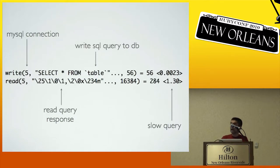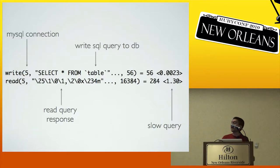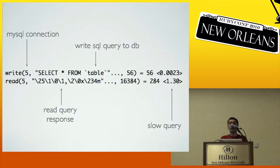Similarly, on a Rails app you'd see something like this: we're writing to file descriptor 5 an SQL query, and then right after that we read the results back. Here you'll notice the read call takes about 1.3 seconds — this is indicative of a slow query. I'll often collect a bunch of S-Trace data and then run a Ruby script on it to look for slow system calls.